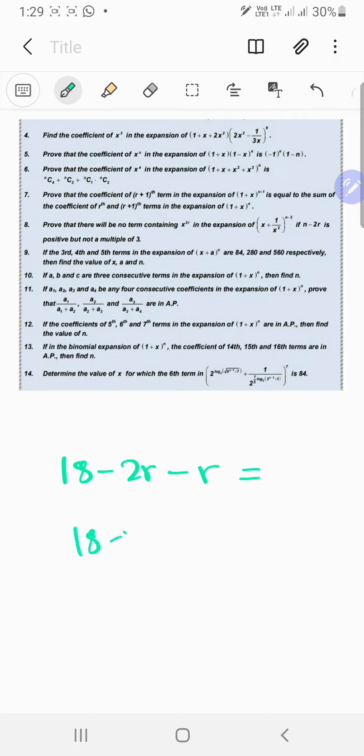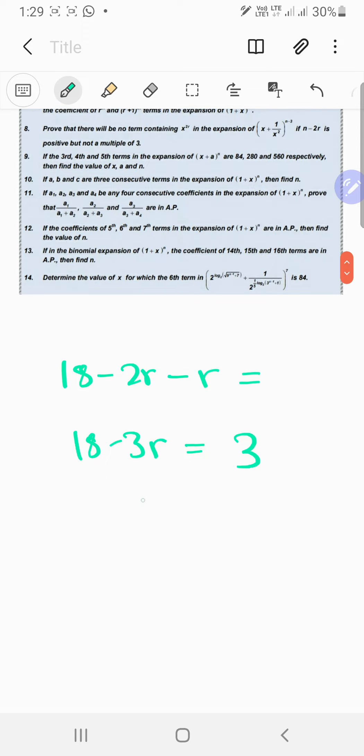So that's supposed to be, well, that's actually obviously 18 minus 3r. Here, when you put 1 over there, you should get that this is actually x cubed itself, so it should be like 3. So that's going to give me like 3r equals 15, so r should be equal to 5.